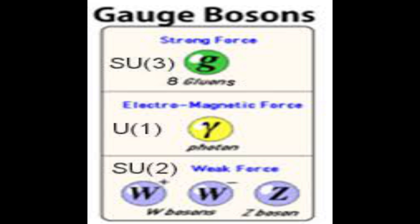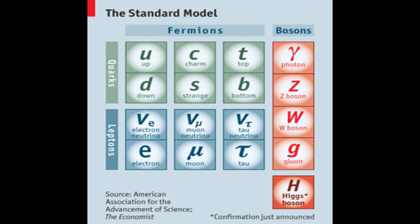Similarly in the leptons we have six leptons. On the top: the electron neutrino, the muon neutrino, and the tau neutrino. On the bottom: the electron, muon, and tau.